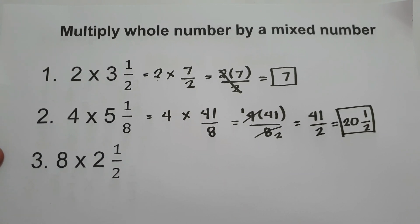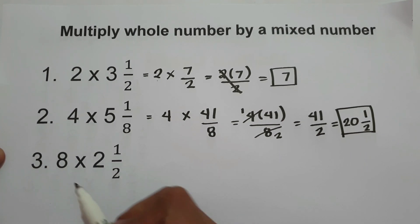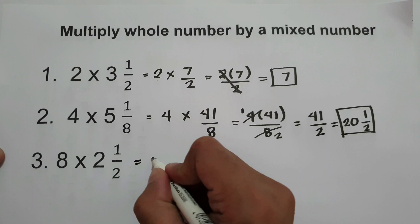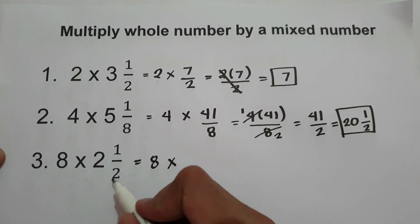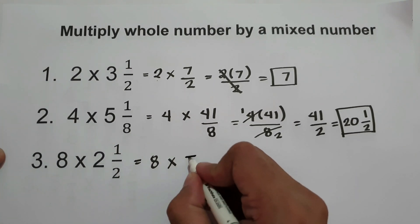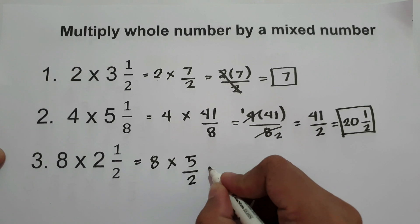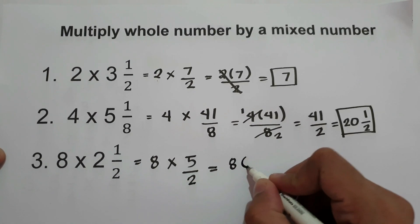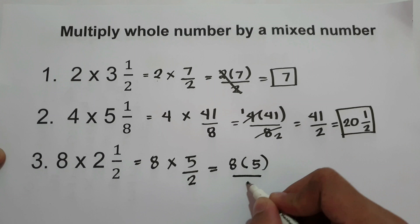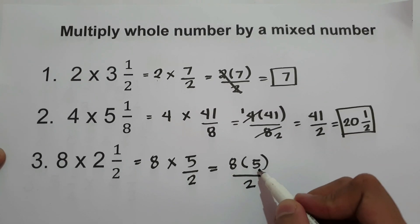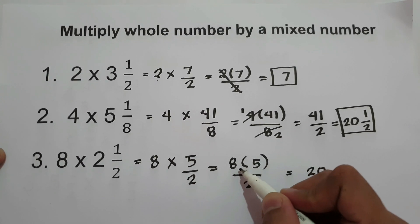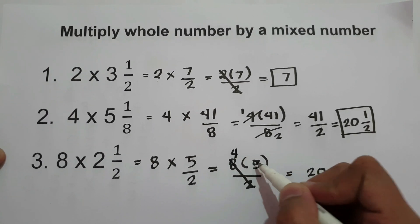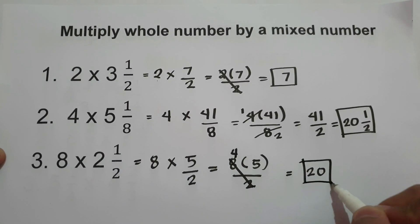What about number 3? Find the product of 8 times 2 and 1 half. Change 2 and 1 half into an improper fraction: 2 times 2 is 4 plus 1, that is 5 over 2. Then 8 times 5 over 2: multiply 8 times 5 to get 40 and divide by 2 to get 20. Or you can divide 8 by 2 first to get 4, then 4 times 5 is also 20. So 20 is our final answer.